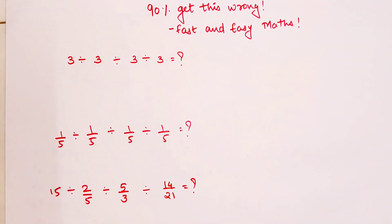Welcome everyone to my channel, Fast and Easy Maths, which is dedicated to give you tips and tricks related to mathematics. So students, today we are going to solve a question where maximum people go wrong. Literally almost 90% of people get it wrong. It's about a division sum.